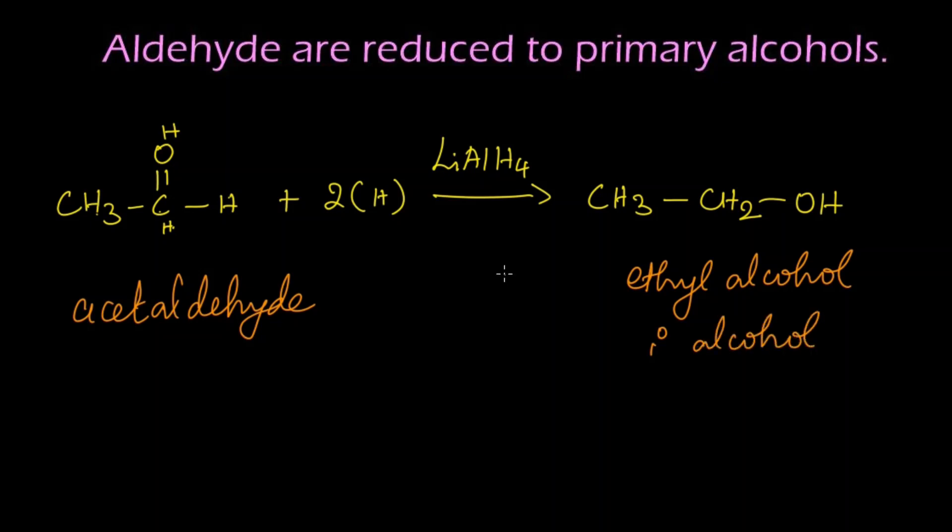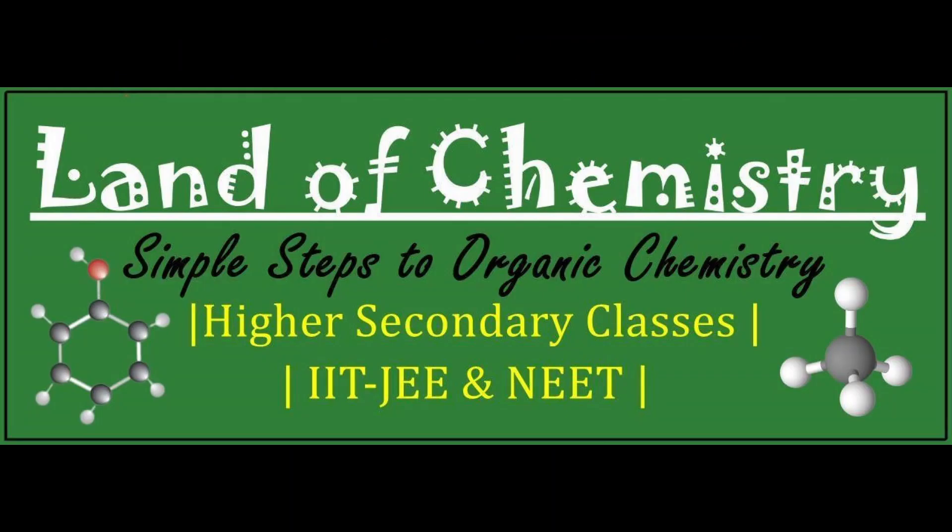Let's summarize the reaction. When aldehyde, that is acetaldehyde, is reduced in presence of reducing agents such as lithium aluminum hydride or sodium borohydride, we get ethyl alcohol, which is a primary alcohol. Thank you.